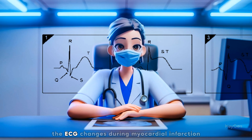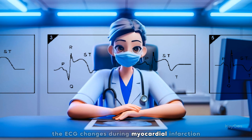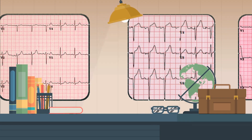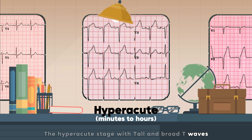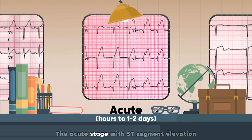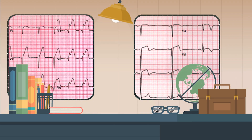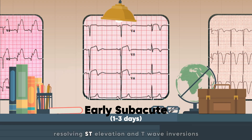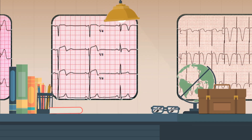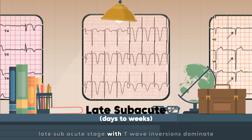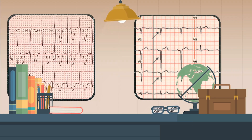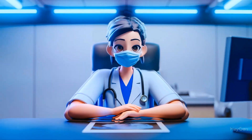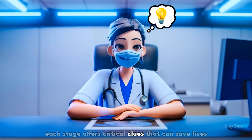Let's summarize the ECG changes during myocardial infarction: the normal ECG with baseline ST segments; the hyperacute stage with tall and broad T waves; the acute stage with ST segment elevation; the early subacute stage with pathological Q waves, resolving ST elevation, and T wave inversions; the late subacute stage where T wave inversions dominate; and the chronic stage with persistent Q waves and normalized T waves. Each stage offers critical clues that can save lives.